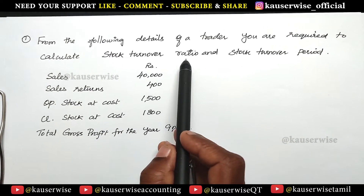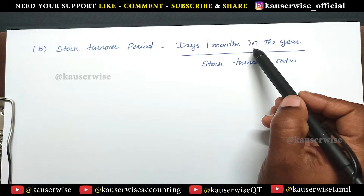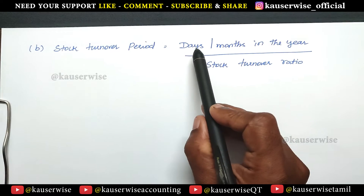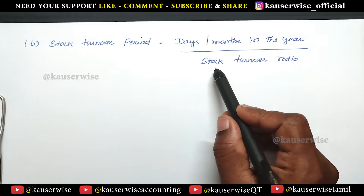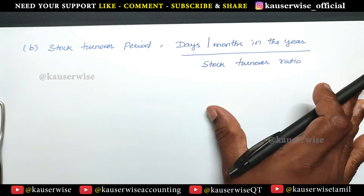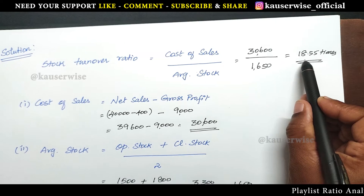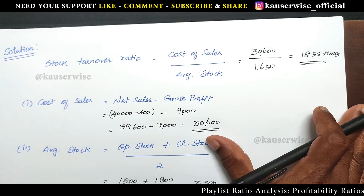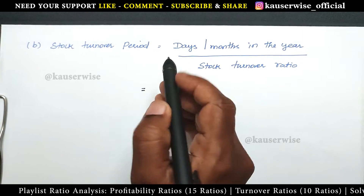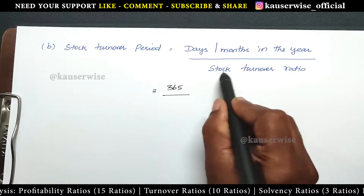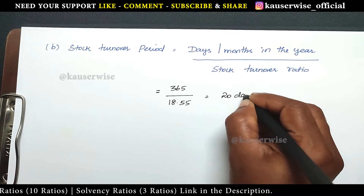We have calculated stock turnover ratio. The next calculation is stock turnover period. This is the formula to find out stock turnover period. The formula is days or months in the year divided by stock turnover ratio. In the previous calculation we found stock turnover ratio is 18.55 times. First we are going to find out the stock turnover period in days. How many days in a year? 365 days divided by stock turnover ratio, that is 18.55. You will be getting approximately 20 days. You can round off the figure.